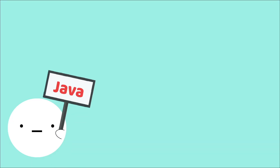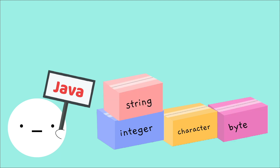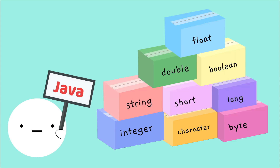For example, the language Java has many different data types including integer, character, byte, strings, short, long, boolean, double, and float. We won't go into detail of exactly what these data types do here, but we'll talk about them in another video.